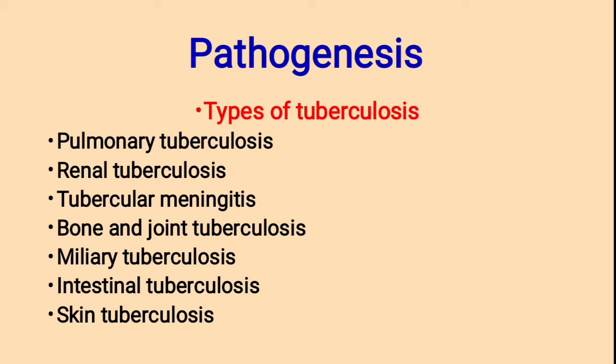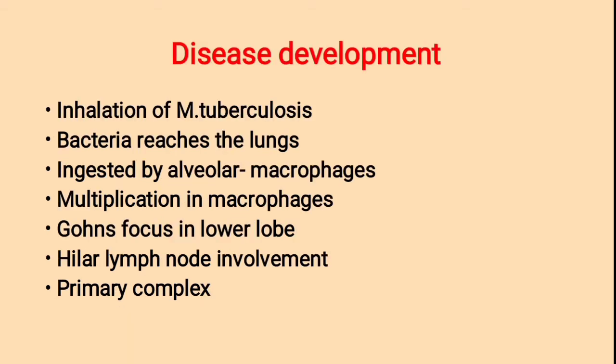Pulmonary means tuberculosis affecting the lungs. Renal means affecting the kidney, and bone and joint, intestinal and skin tuberculosis are the other forms.